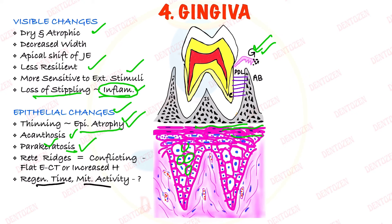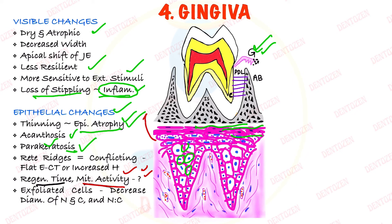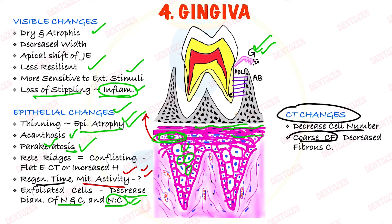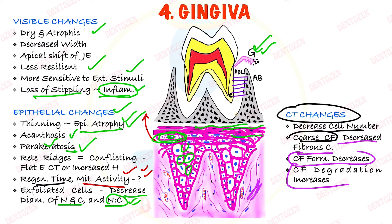Regeneration time and mitotic activity — the proliferation capacity of cells — also show conflicting results. In exfoliated cells shed from the gingiva, there is decreased nuclear diameter, decreased cell size, and decreased nucleocytoplasmic ratio. In the connective tissue, cells decrease in number, fibers become coarser and thicker, and the fibrous component decreases with age. Collagen fiber formation decreases and collagen fiber degradation increases, resulting in less fibrous component.